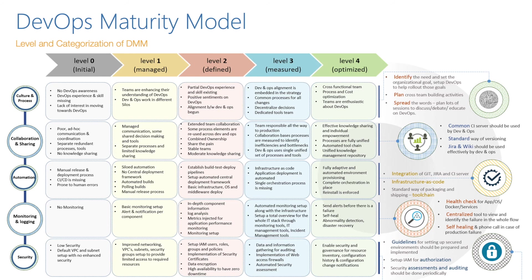At the optimized level you get cross-functional teams, process and cost optimization, teams are enthusiastic about DevOps, security and governance are enabled, resource inventory is maintained, configuration history is maintained, and configuration change notifications are monitored. Monitoring and logging is the building block of DevOps. If you reach the defined level you might still have a good DevOps practice suited to a small project — at that level you have partial DevOps experience and skill with positive sentiment toward the process.